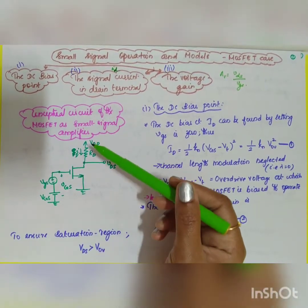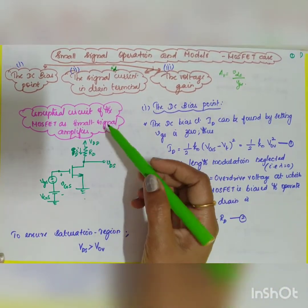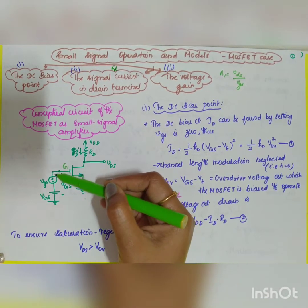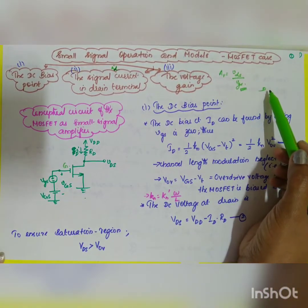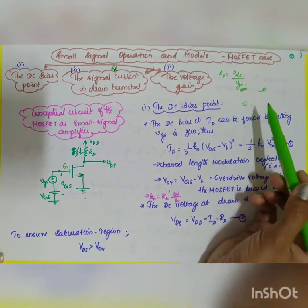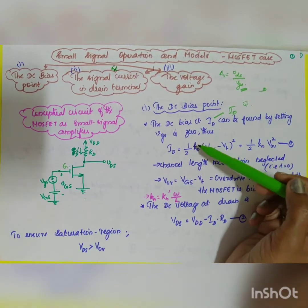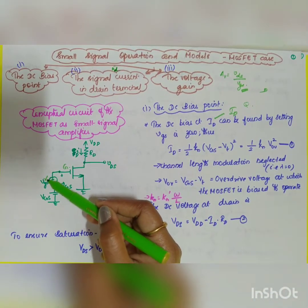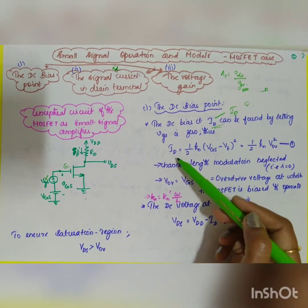This is the conceptual circuit of the MOSFET — a common source n-channel enhancement MOSFET where the source is grounded. Here you have VDD and a resistor across the drain. At the gate, you apply both AC and DC signals — AC is denoted by small letters and DC by capital letters, as seen in BJT analysis. The first topic is the DC bias point: to fix your operating point Q, you set the AC signal to zero.